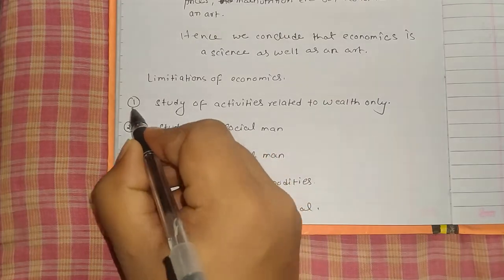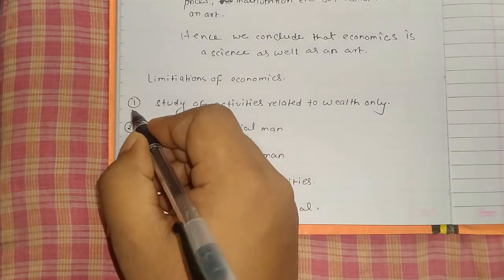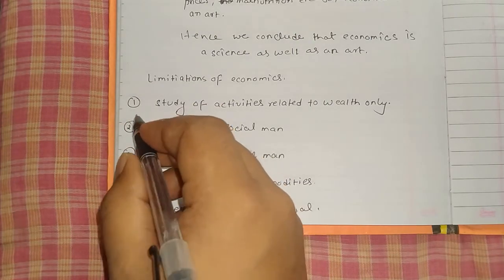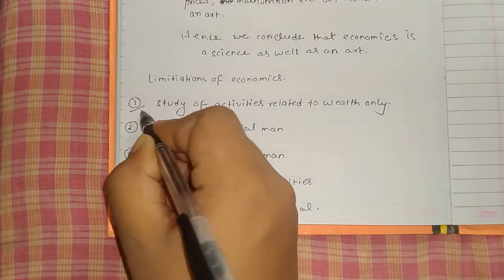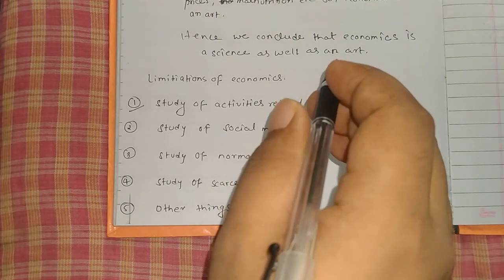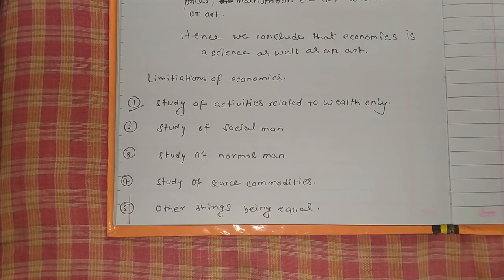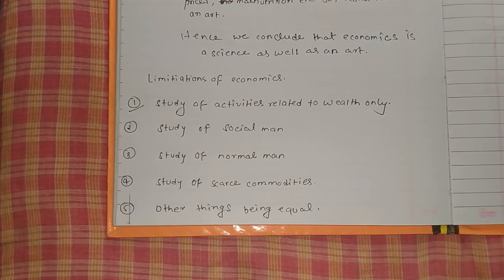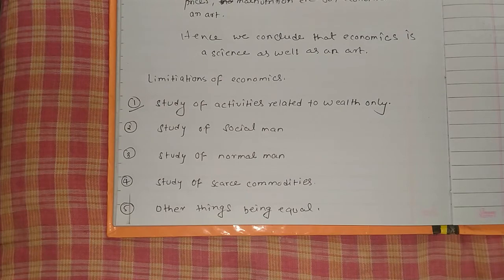Economics also has limitations. The first limitation is that economics studies only activities related to wealth — such as management of money and how to spend it. It does not study other activities of man such as religious, political, social, or cultural activities. Only those things related to wealth are studied under economics.